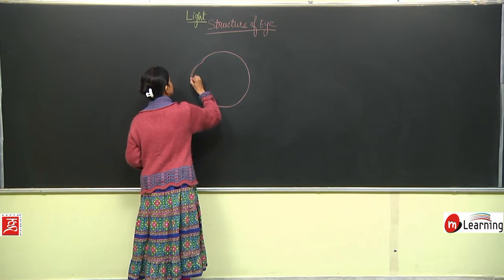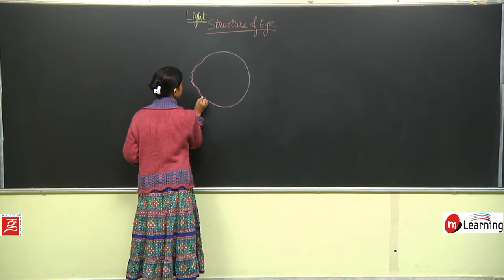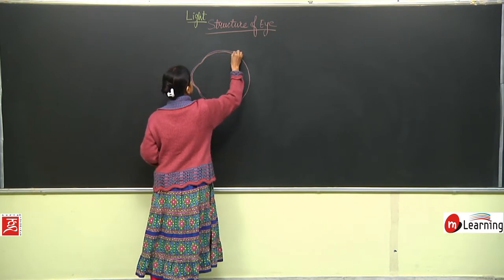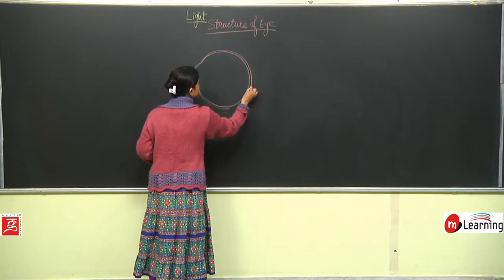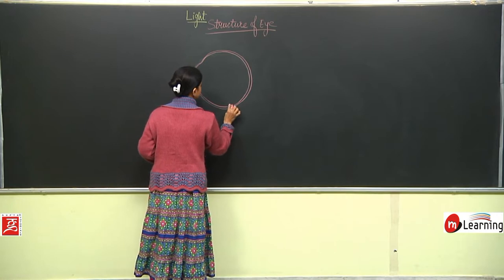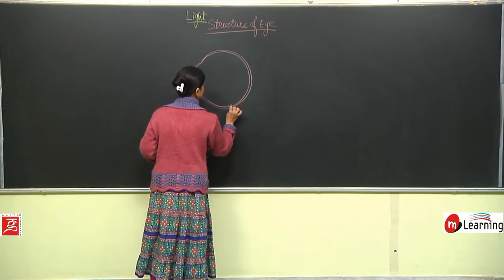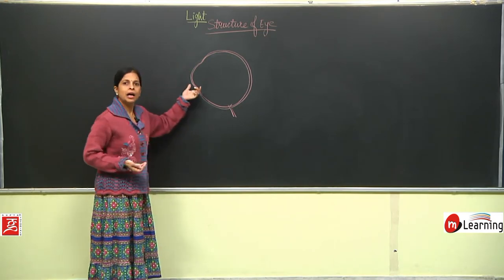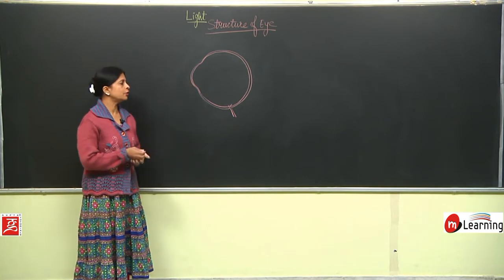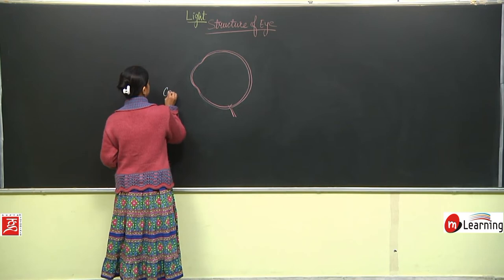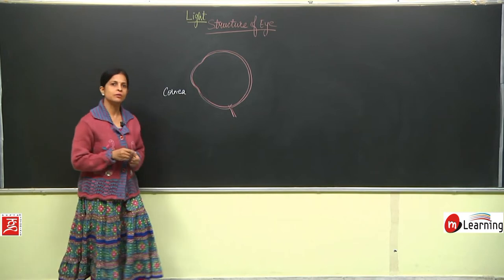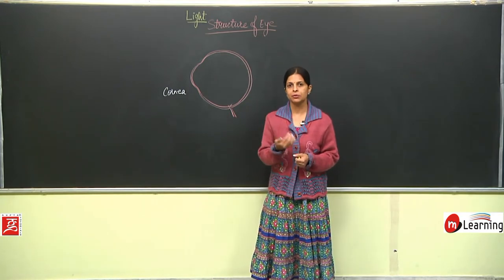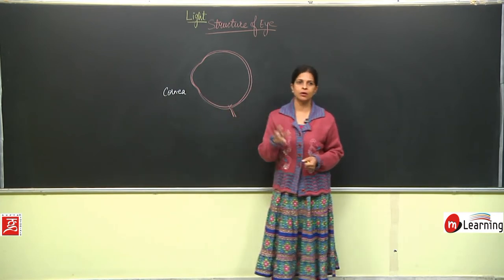This outermost part is known as the cornea. Let us begin with the structure of the eye. You can see this outer bulgy part of the eye — this outer bulgy part is known as the cornea. Whatever amount of light enters into our eye enters from this bulgy part, which is known as the cornea.